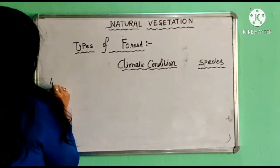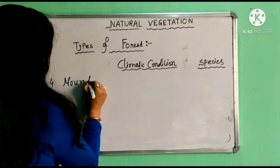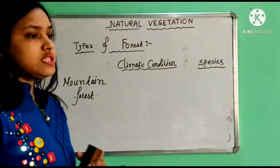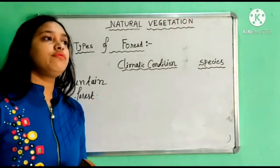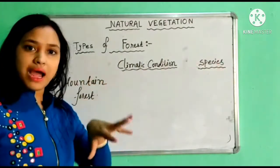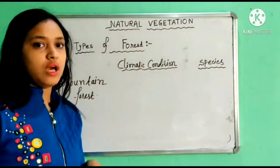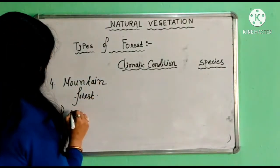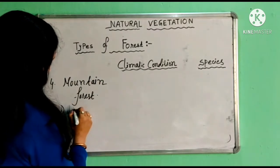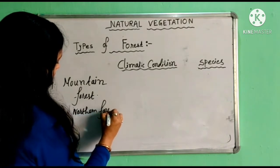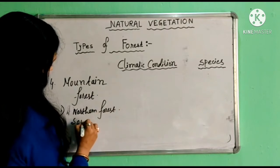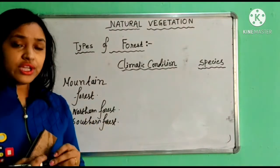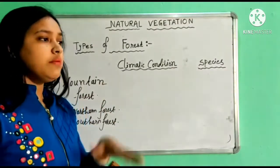Our next type is mountain forest. Mountain forest is mainly divided into two parts: one found in the northern part, that is mainly the Himalayan range, and one in the southern part covering peninsular India. So we divide mountain forest into two categories: northern forest and southern forest.